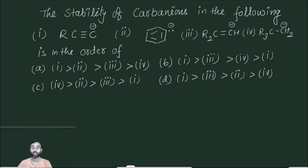To decide the stability order, we should keep in mind that the one which can hold a negative charge — which can hold an electron pair — is more stable. That means the negative charge is more stable on a more electronegative atom.